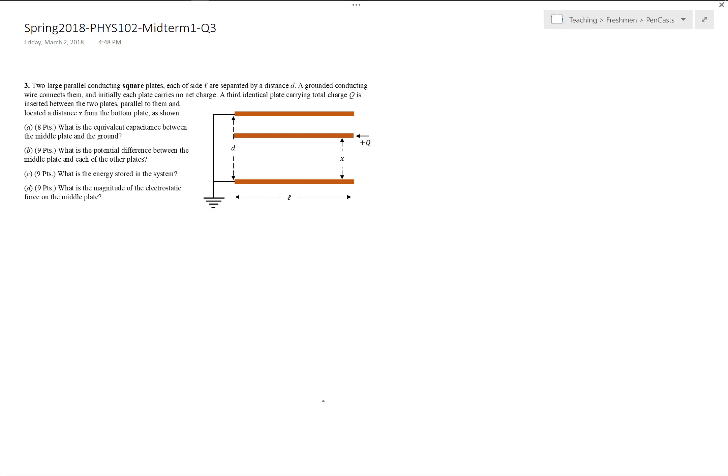Okay, this is the solution for Spring 2018 Physics 102 midterm 1 question 3. We are asked to consider a system which is made up of square plates of side L. This is a cut from the full figure which apparently is made by three large plates arranged like this. The upper plate and the lower plate is grounded and presumably I have some other terminal to put charge Q onto this plate.